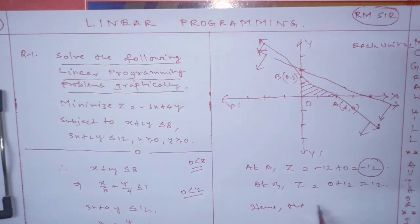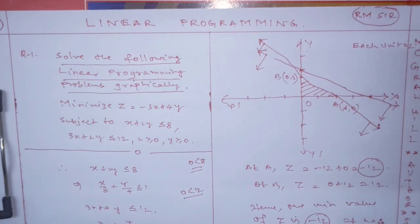So that means, hence the minimum value of z is minus 12 at what point? At x equals 4 and y equals 0. Nothing else.